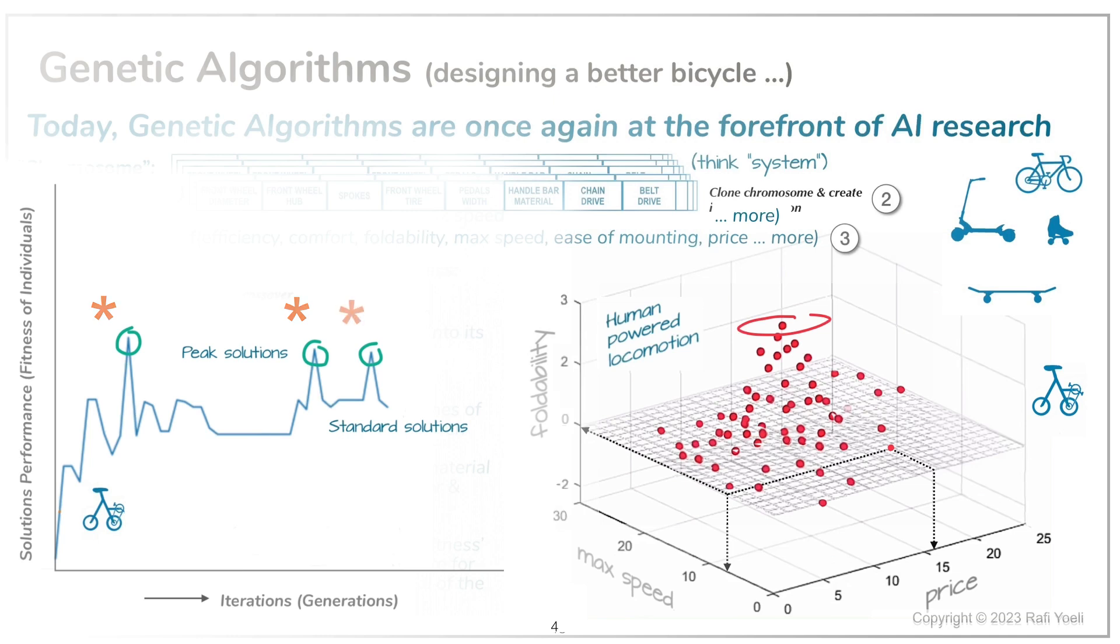Usually, some algorithm parameters have to be adjusted to get a steady build-up of the fitness function. These include the size of the population, the frequency of mutations and a few more.